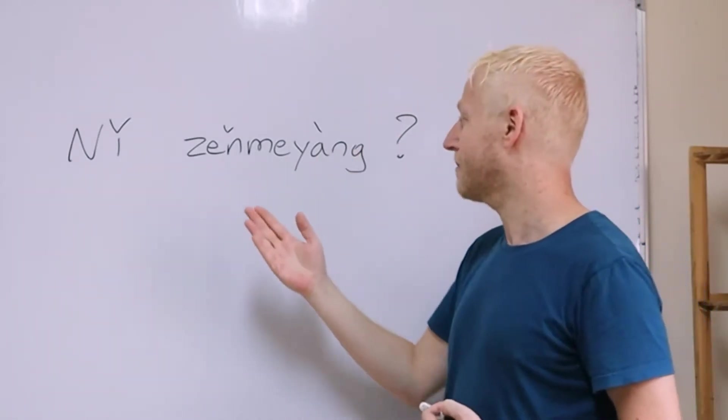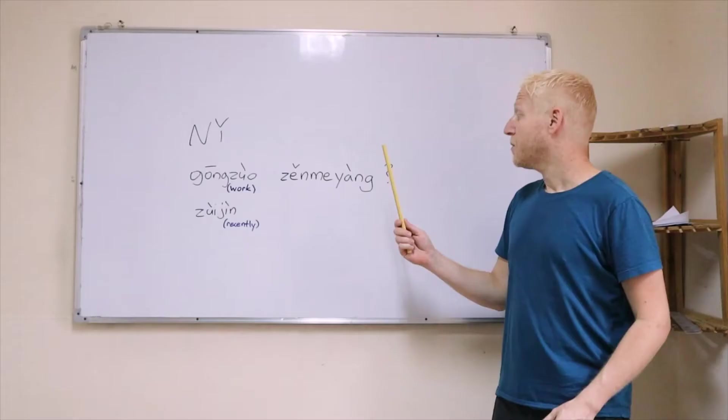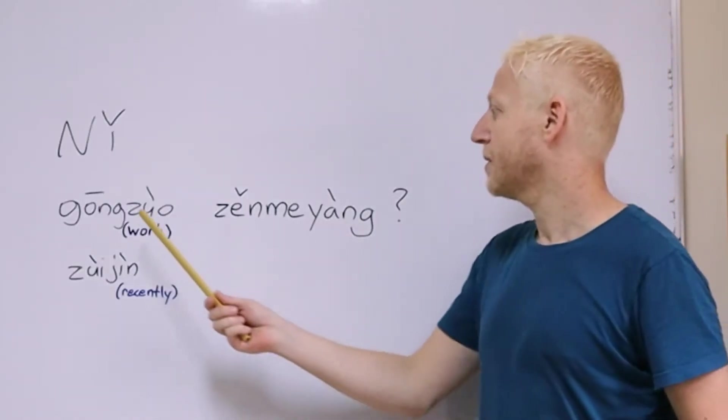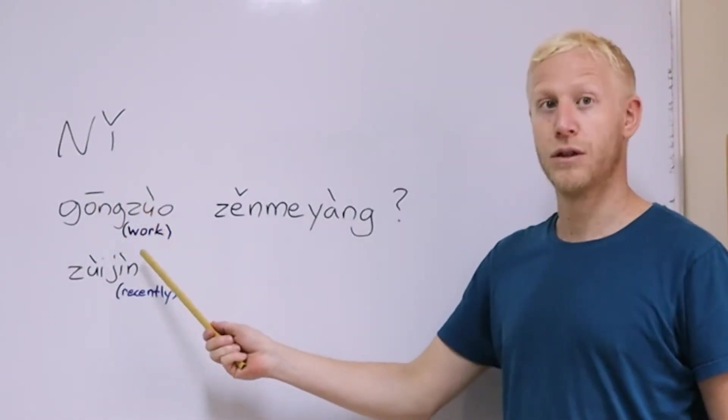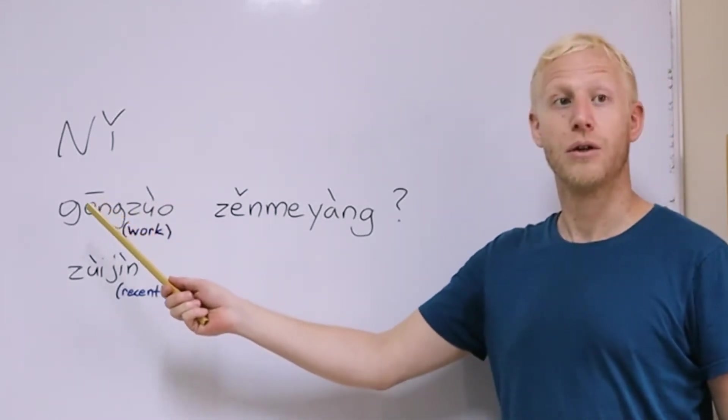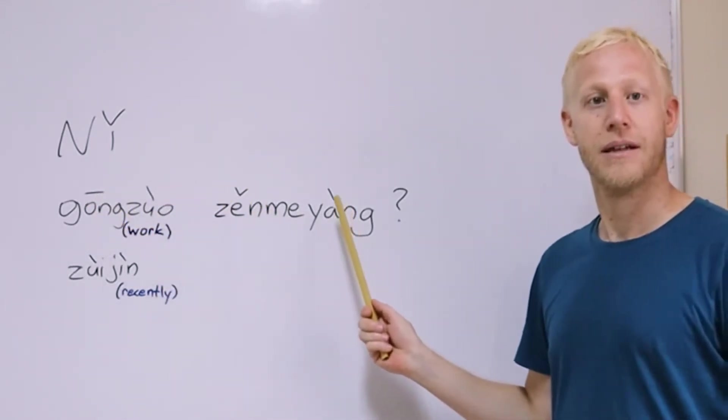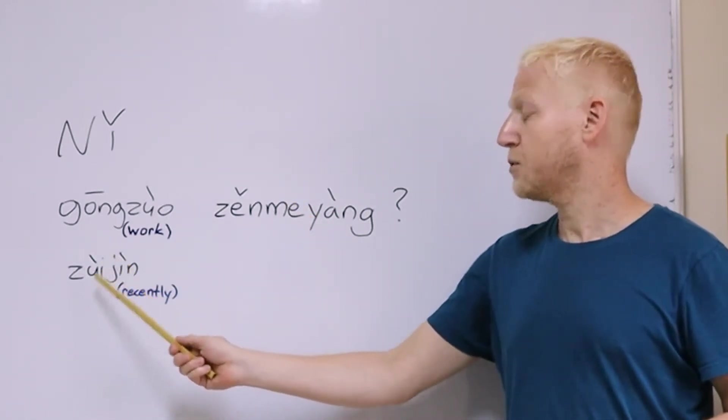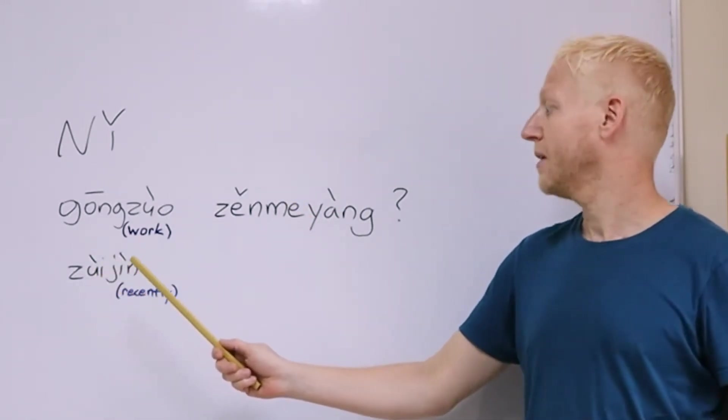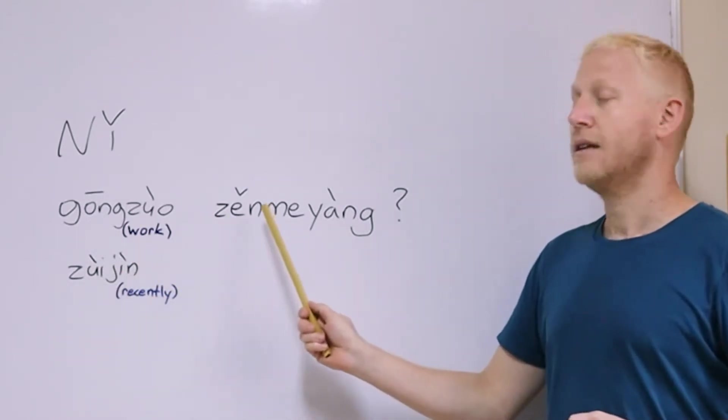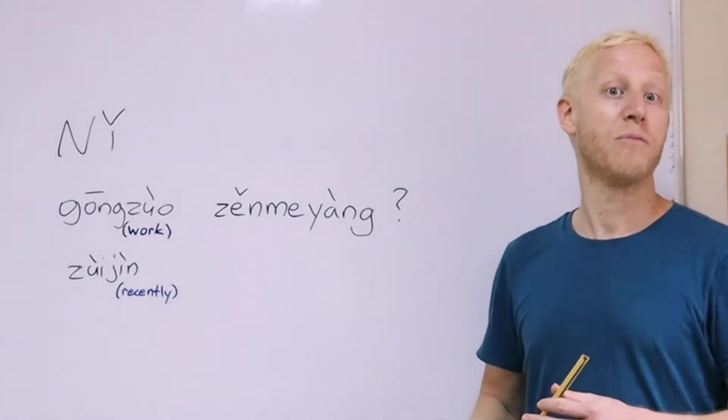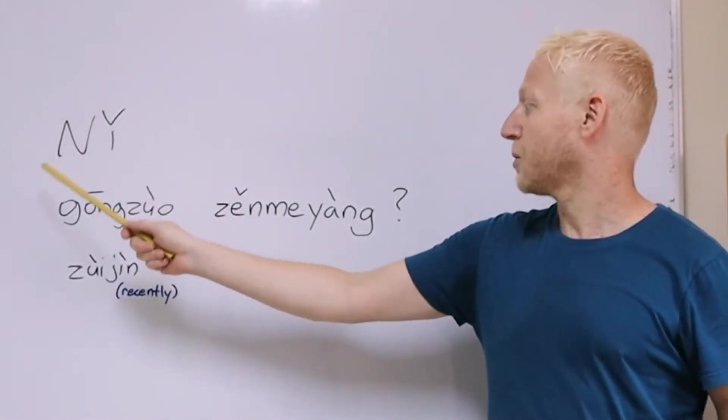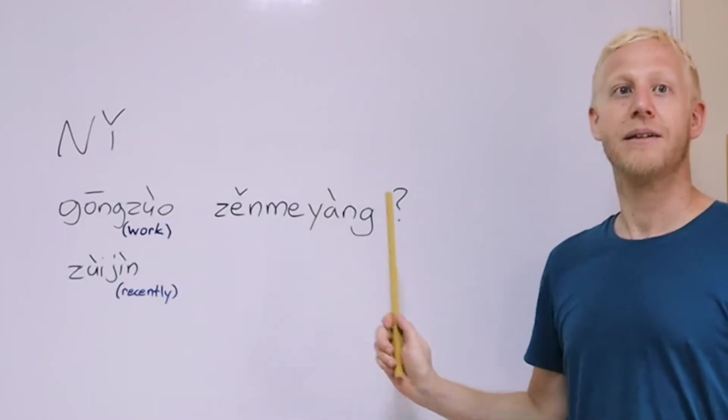And then the answer will be I am great. You can use 怎么样 also to ask other questions. For example 工作 which means work. If you ask 工作怎么样 that means how's your work. Or 最近, recently. 最近怎么样 would mean how have you been recently.